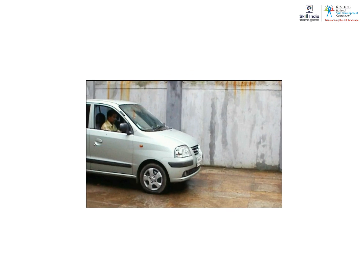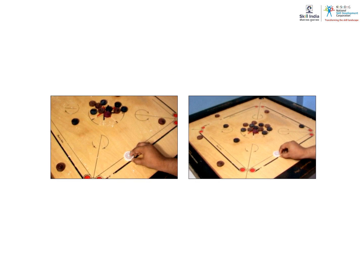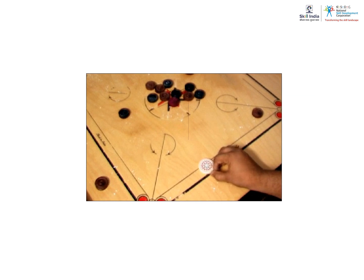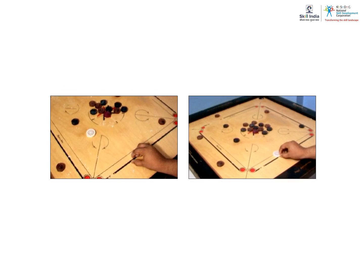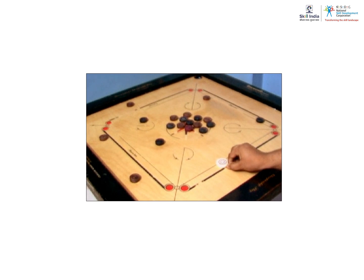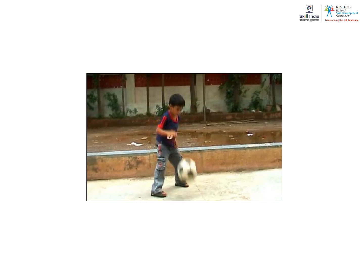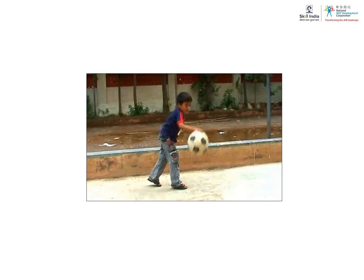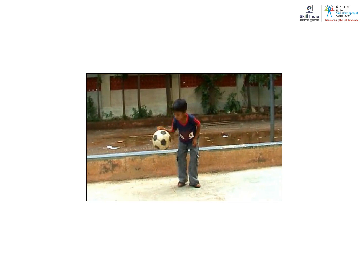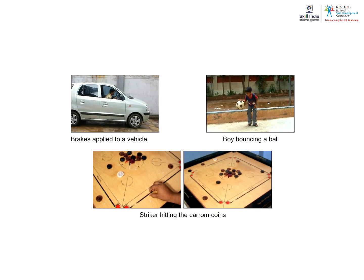What happened to the person sitting in the vehicle when the driver applied brakes? What was the effect of the striker on the coins in both cases? In the first case, why did none of the coins move? In the second case, why was the striker able to strike the coins and change their positions? Why could the boy bounce the ball so many times? What was common to all these visuals?